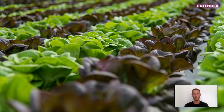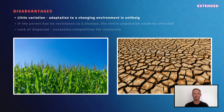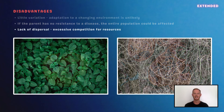The main disadvantage of asexual reproduction is a lack of genetic diversity. In a changing environment, a species that reproduces asexually may be unable to adapt to the new conditions due to a lack of variation in characteristics. This also means that a disease or parasite that affects one individual is likely to spread throughout the entire population. Finally, the lack of dispersal associated with asexual reproduction in plants can result in excessive competition for water, light, and nutrients.